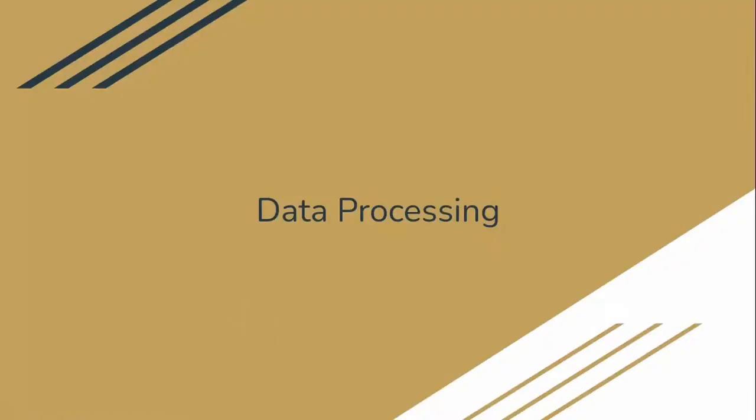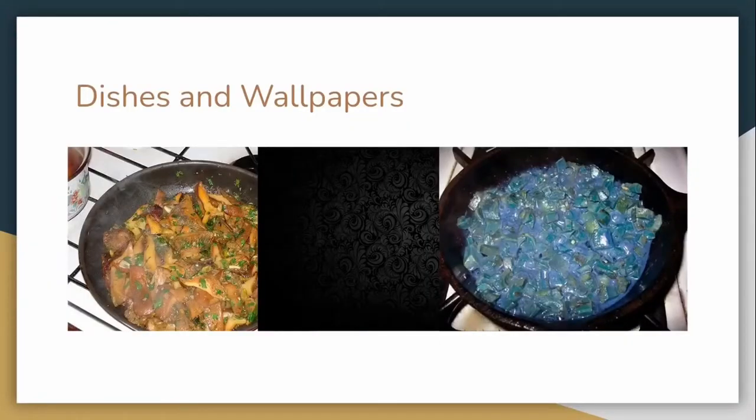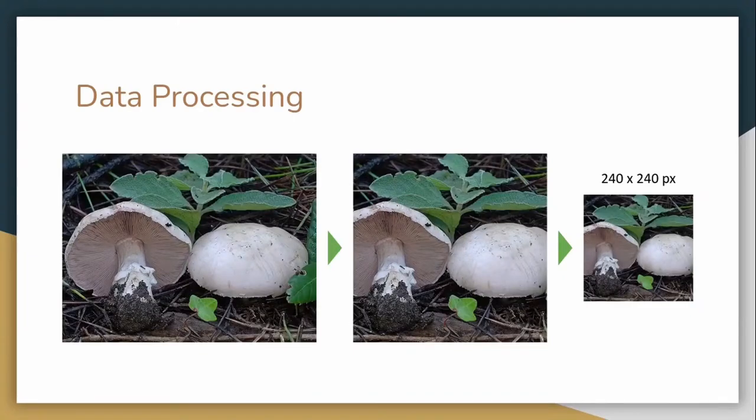So what do we do with our data? First, we did a visual inspection and removed obvious anomalies. Then, as the images came in many different shapes and sizes, we crop each photo to the largest square it contains and resize the square to 240x240 pixels, the shortest dimension of all.